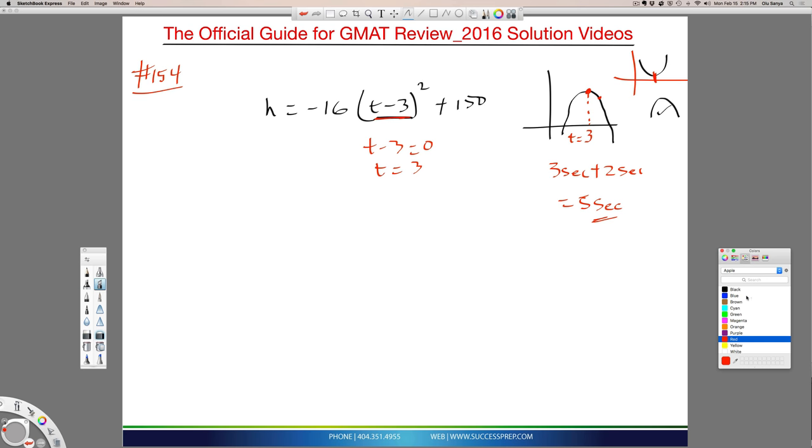So anyway, back to our question here. Since we know the max height is at 3, and they asked for a time 2 seconds after, it would be 3 plus 2, which is 5. So we're talking about the 5th second mark. The question here is asking for the height at that point. The height at the 5th second, at 5 seconds.